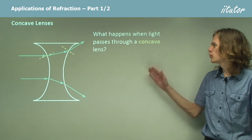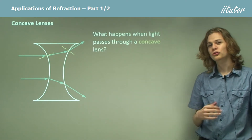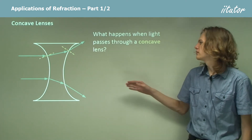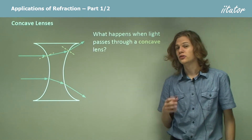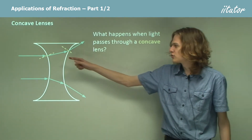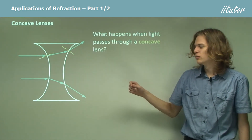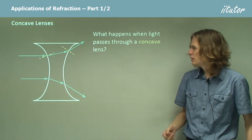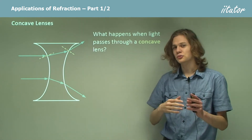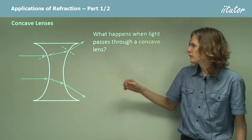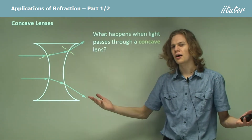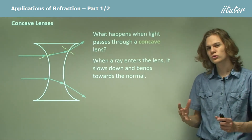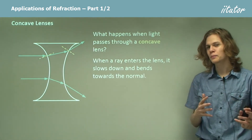So what happens when we put the wave through a concave lens? We can use our laws of refraction to see how a ray of light will interact. When we enter a very dense medium, we will slow down and bend towards the normal, which is marked here as a dotted yellow line. We can see that the beam of light, as it enters the new medium, bends towards the normal because it's slowing down. On the other side, it will bend away from the normal. When it enters the lens it slows down and bends towards the normal; when it exits, it speeds up and bends away from the normal.